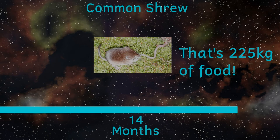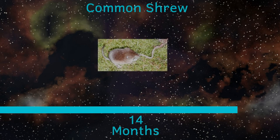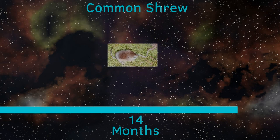Shrews get around this by not hibernating during the winter — they can't; they'd starve within the first day. To overcome the problem of there being less food available in winter, shrews shrink. Their bodies become about 18% less massive, and their brains shrink by an even greater percentage — up to 30% — which means that during the winter, shrews probably become a bit more stupid.